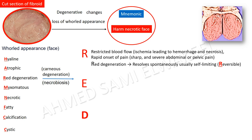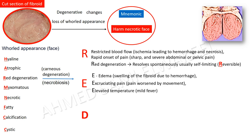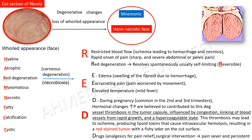Red degeneration mnemonic RED: R — restricted blood flow, ischemia leading to hemorrhage and necrosis; R — rapid onset of sharp, severe abdominal or pelvic pain; R — resolved spontaneously, usually self-limiting. A — clinical picture includes excruciating pain and edema; E — elevated temperature. D — during pregnancy, common in the second and third trimester. Hormonal changes and vessel thrombosis in the tumor capsule lead to ischemia, producing lipoid toxins causing intravascular hemolysis, resulting in a red-stained tumor with a fishy odor on the cut surface. D — drugs: analgesics for pain relief or surgical intervention for severe or persistent symptoms.